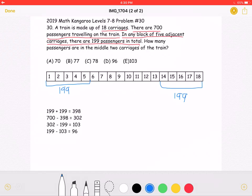And we're starting with the ends because the question asks for the number of passengers in the middle. Okay, so we have 2 blocks of 5 adjacent carriages, which means a total of 10 carriages.